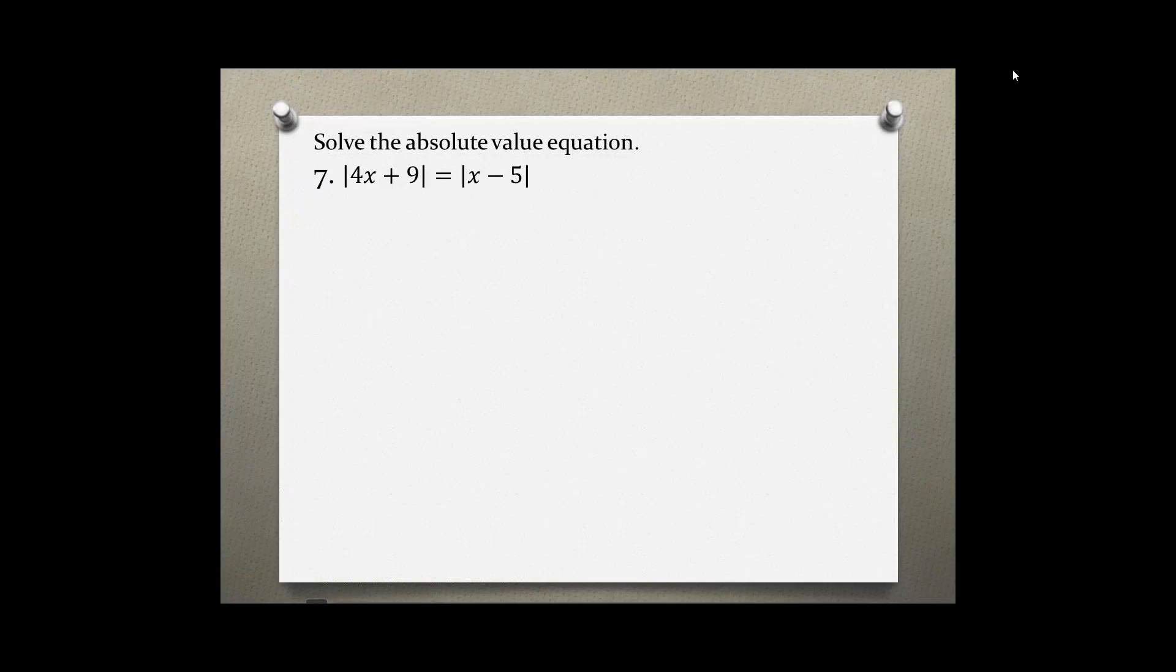Solve the absolute value equation problem number seven. The absolute value of 4x plus 9 equals the absolute value of x minus 5.